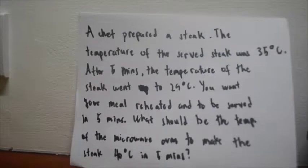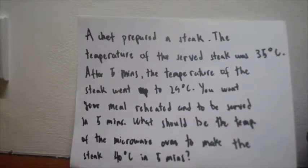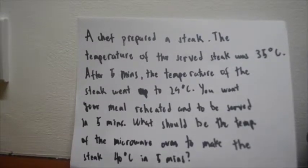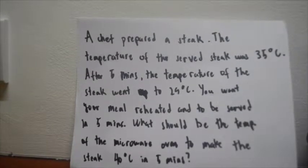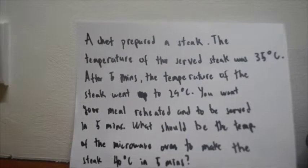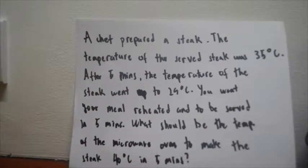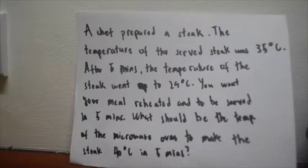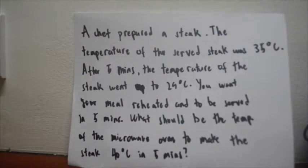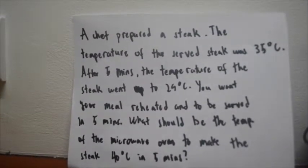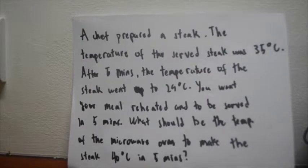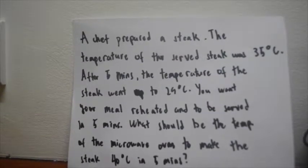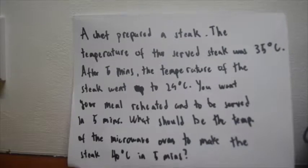The problem is: a chef prepared a steak. The temperature of the served steak was 35 degrees Celsius. After 5 minutes, the temperature of the steak went to 29 degrees Celsius. You want your meal reheated and to be served in 5 minutes. What should be the temperature of the microwave oven to make the steak 40 degrees in 5 minutes?